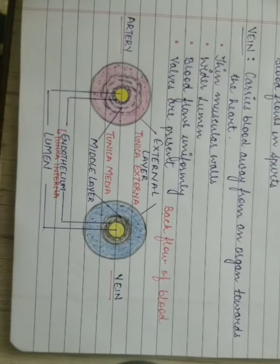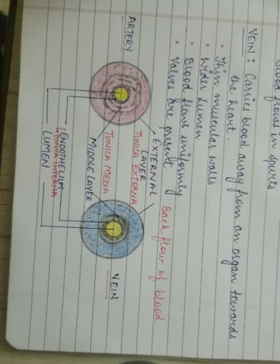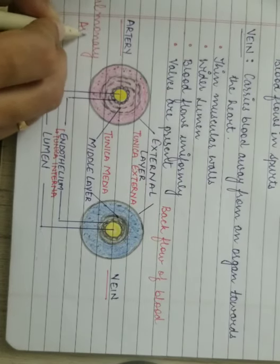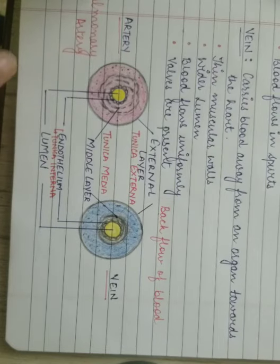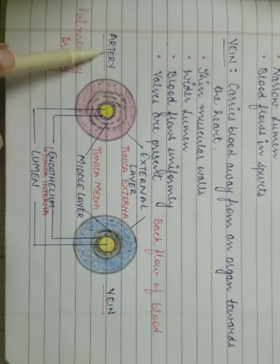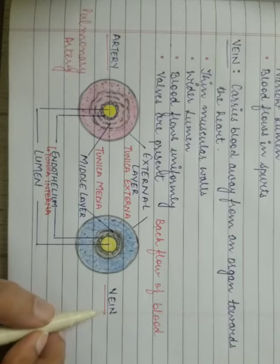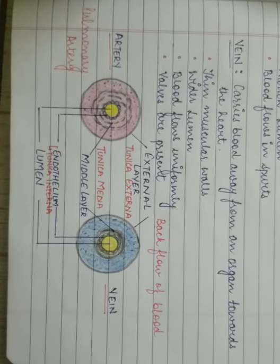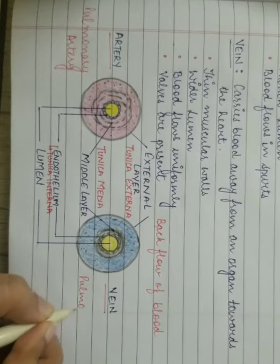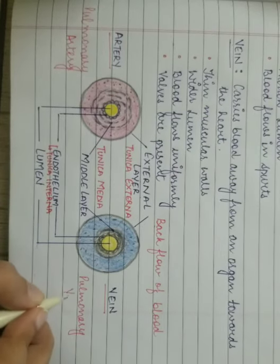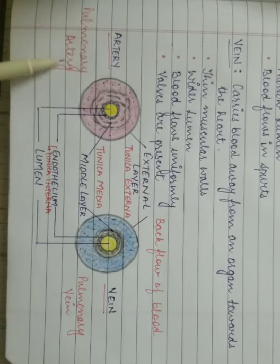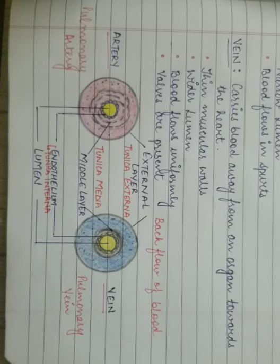The arteries carry oxygenated blood, but there is an exception: the pulmonary artery. The pulmonary artery carries deoxygenated blood. Except for the pulmonary artery, all arteries carry oxygenated blood. The veins carry deoxygenated blood — carbon dioxide-laden blood — except the pulmonary vein. The pulmonary vein carries oxygenated blood. When discussing the structure of the heart, we will discuss how the pulmonary artery and vein function.